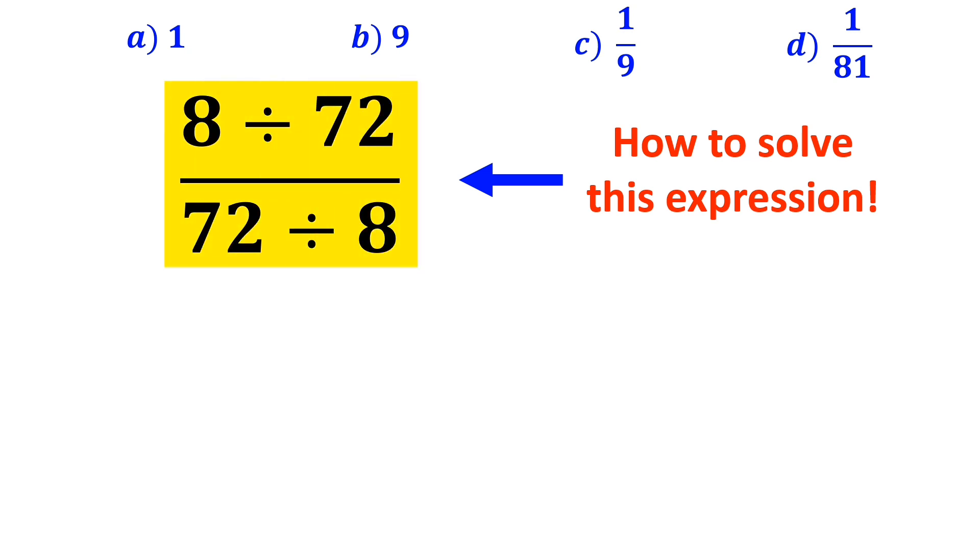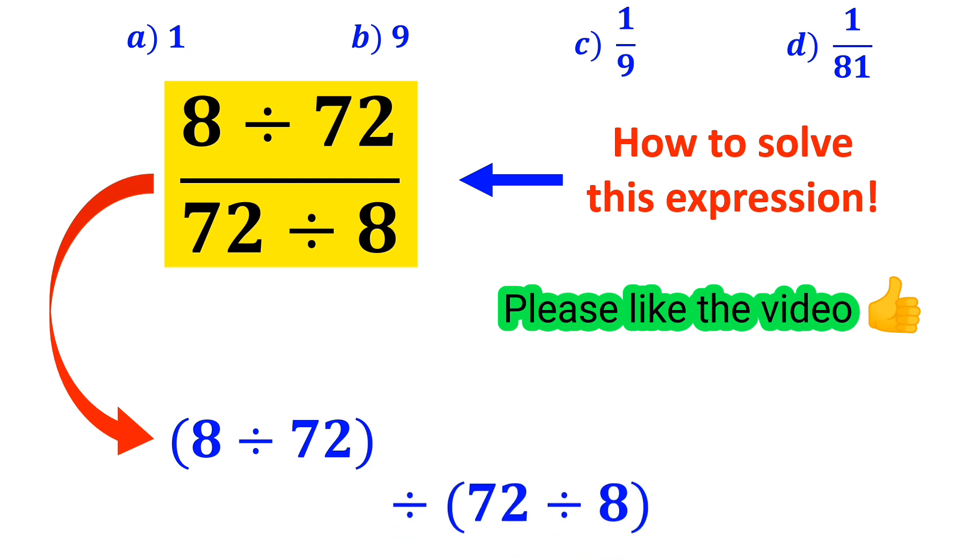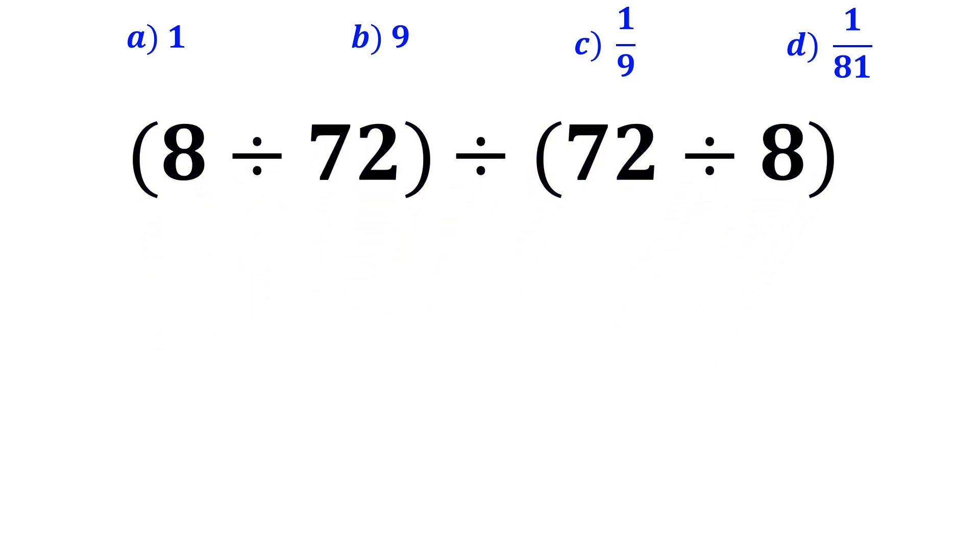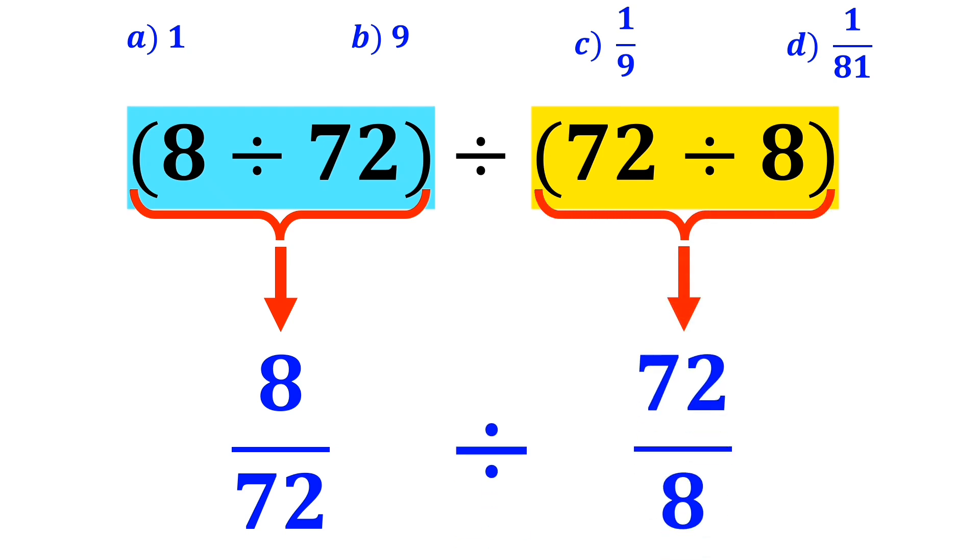First, we'll write this expression in the following form: 8 divided by 72 then divided by 72 divided by 8. Now, instead of the part that I've marked in blue, we write the fraction 8 over 72. And for the part which I've highlighted in yellow, we write 72 over 8.